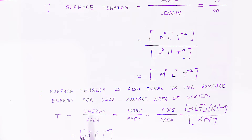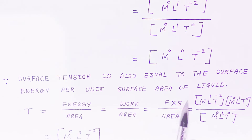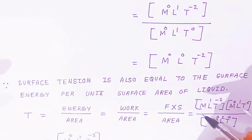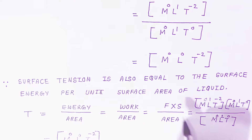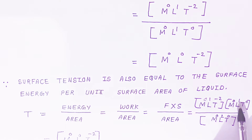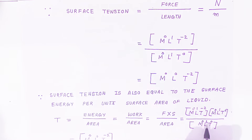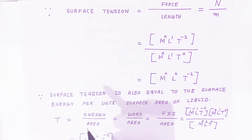Surface tension can also be defined as surface energy per unit surface area of liquid: T = Energy/Area = Work/Area = (Force × displacement) / Area. The dimension of force is M¹L¹T⁻², displacement is L¹, and area is L². So dimensions = M¹L¹T⁻² × L¹ / L² = M¹L⁰T⁻². This confirms the same dimension M¹L⁰T⁻² for surface tension.